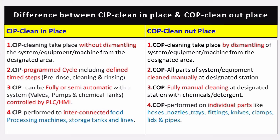The fourth and final point: CIP is performed on interconnected food processing machines, storage tanks, and lines, while COP is performed on individual parts such as hoses, nozzles, trays, fittings, knives, clamps, lids, and pipes. This is the difference between CIP and COP.